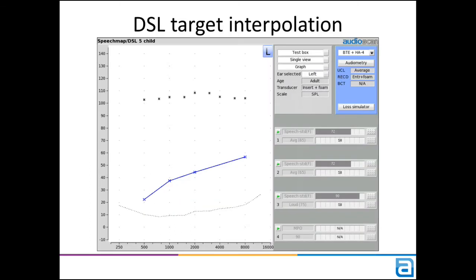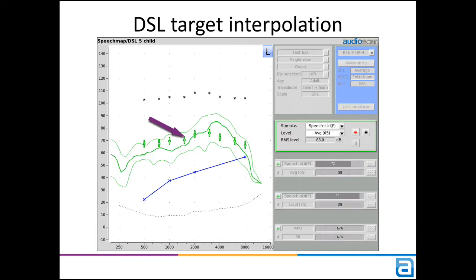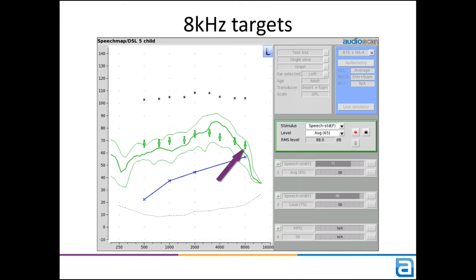Next, we have DSL target interpolation. Previously only implemented in NAL-NL2, target interpolation allows for targets to be displayed at audiometric frequencies for which HL values were not entered. As you can see here, a speech test with an incomplete audiogram will still provide a complete set of speech targets. Also, you'll now notice that DSL is providing targets at 8 kHz, while previously these stopped at 6.